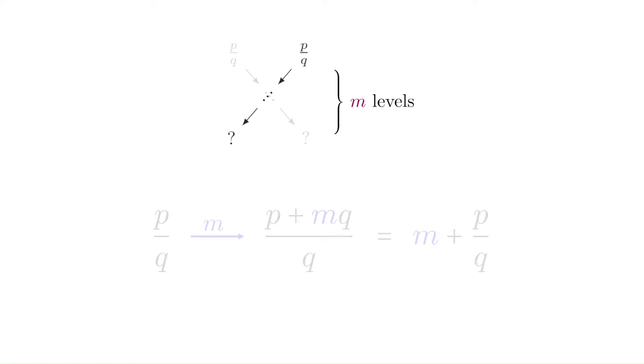On the other hand, we make m left movements by adding p to the denominator m times. This doesn't simplify right away, but the trick here is to invert the reciprocal of this fraction. Now it simplifies, and we'll do another double inversion to write this in terms of p over q.